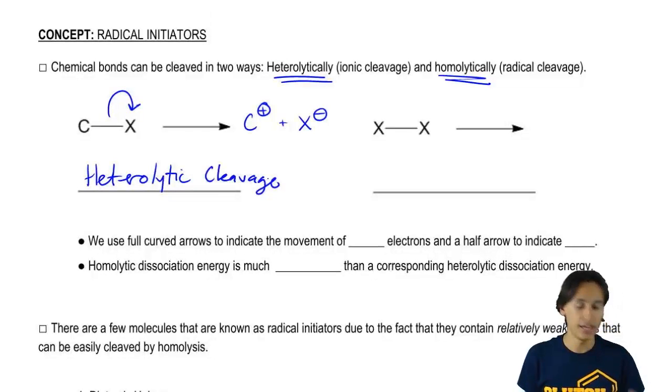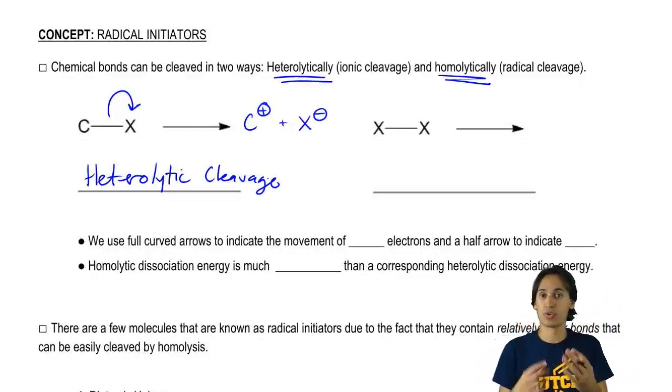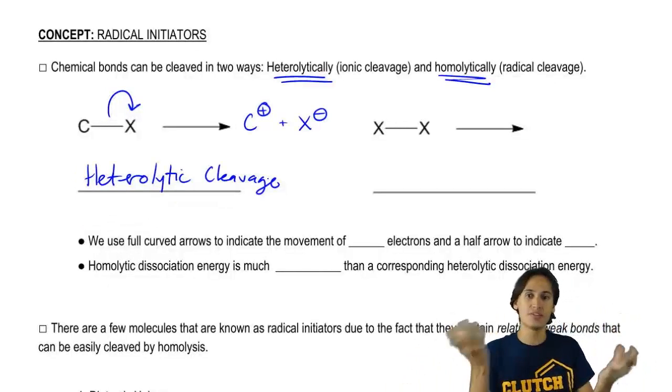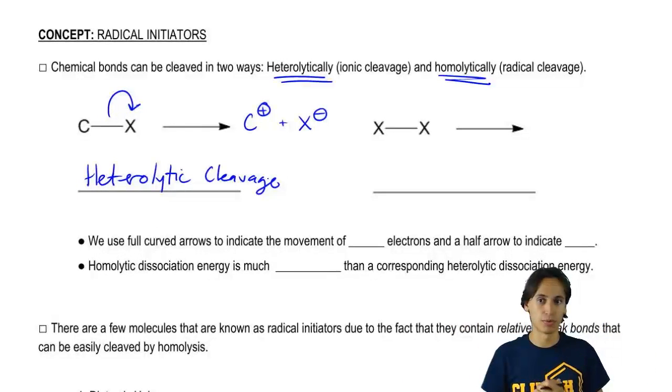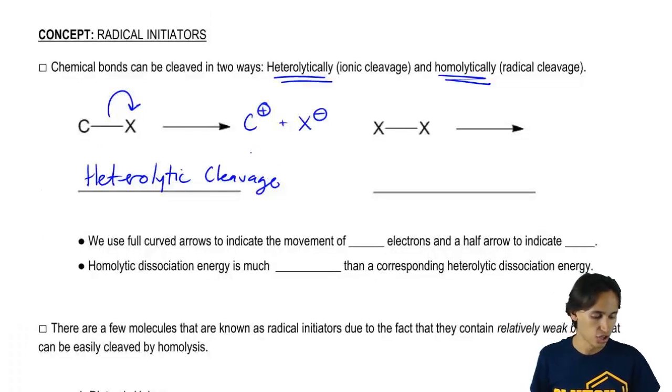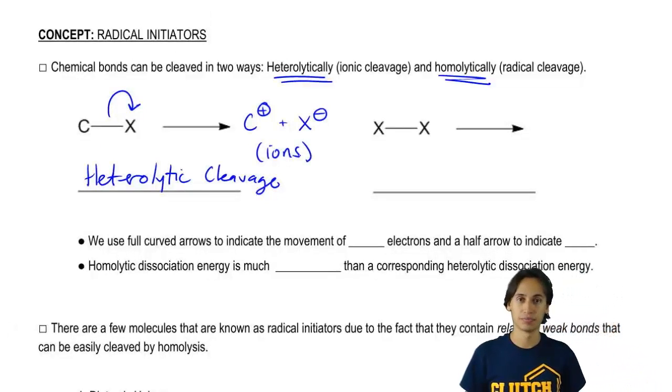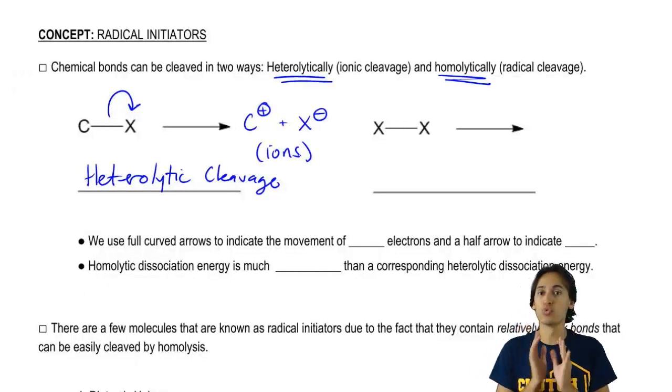Now the reason that we call it heterolytic is because hetero stands for the word different. So you're getting different amounts of electrons on both. Notice what this creates is ions. Your products are different ions, a cation and an anion. So that's one way to break bonds.